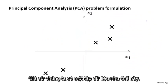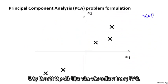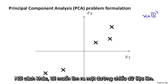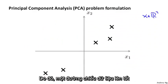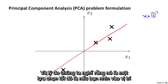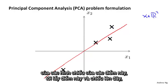Let's say we have a data set like this — a data set of examples x in R2. Let's say I want to reduce the dimension of the data from two-dimensional to one-dimensional. In other words, I would like to find a line onto which to project the data. A line like this might be a pretty good choice. If you look at where the projected versions of the points go...